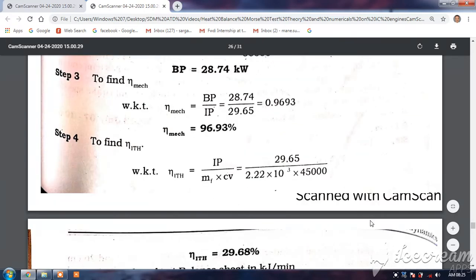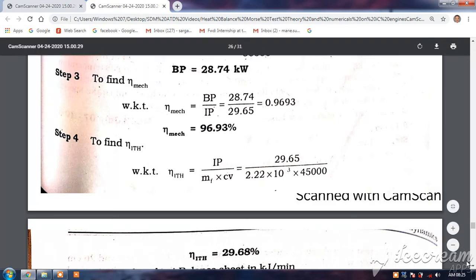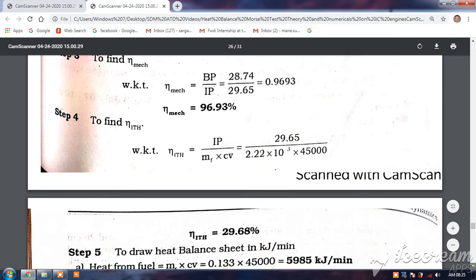Indicated thermal efficiency is equal to IP divided by mass of fuel into CV. Here, mass of fuel is in kg per second. So, substituting the values here, you will get indicated thermal efficiency as 29.68 percentage.